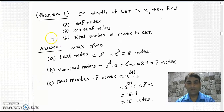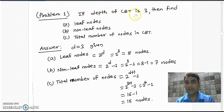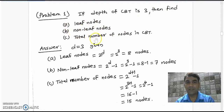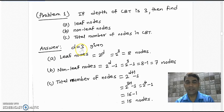Let us see the first problem on the complete binary tree. If the depth of the complete binary tree is given as 3, then find the number of leaf nodes, number of non-leaf nodes, and total number of nodes in the complete binary tree. In the answer, we will first write d equal to 3, that is the depth given to us is 3.